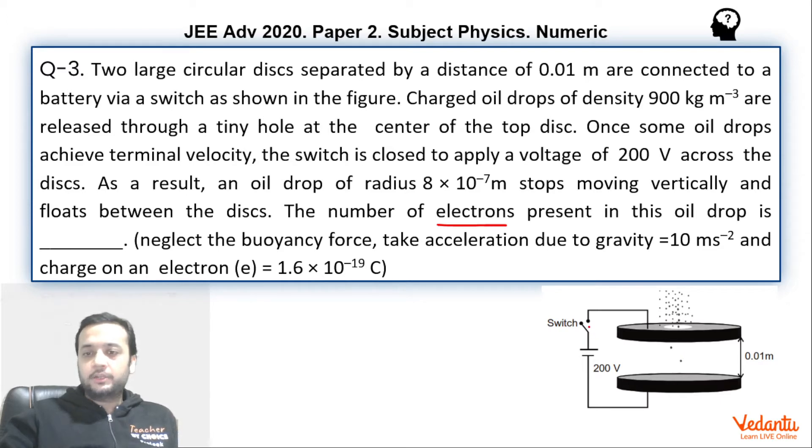The moment you close the switch, what happens? The positive charge gets accumulated on the upper plate of the capacitor. The negative charge gets accumulated on the bottom plate of the capacitor, which sets up an electric field in the downward direction. This electric field starts applying a force on the negatively charged drop in the upward direction, which starts retarding or decreases the speed of the charged particle.